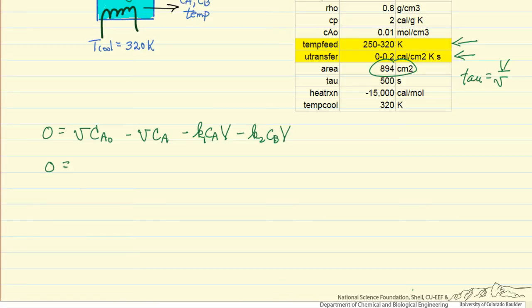Likewise we'll write down the energy balance, where the volume times the density is the mass flow rate, and the mass heat capacity, T minus T0, the term that corresponds to energy. If the feed is colder than the reactor temperature, the energy will heat up the feed.